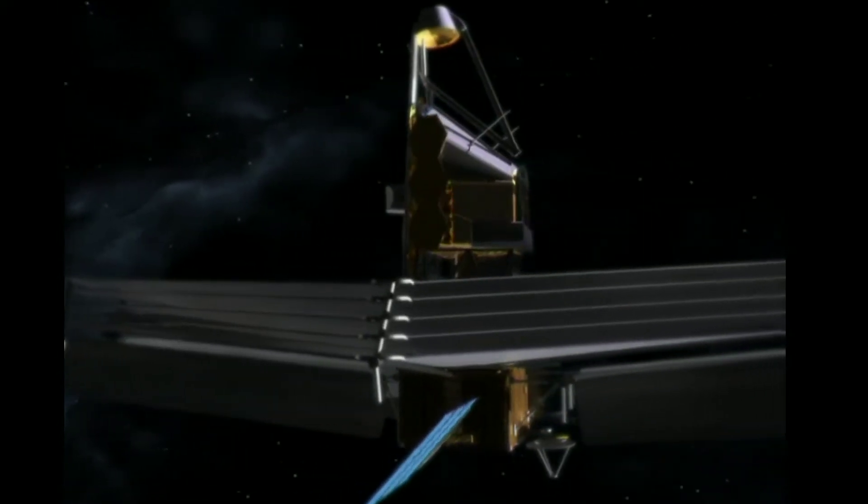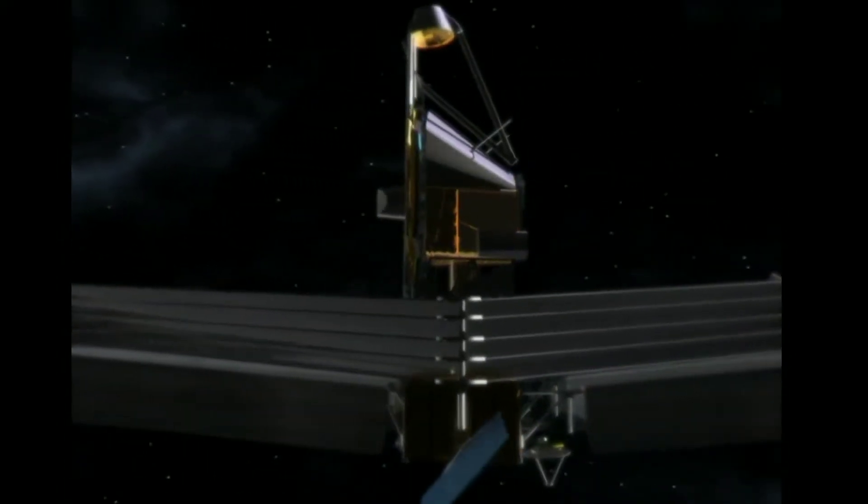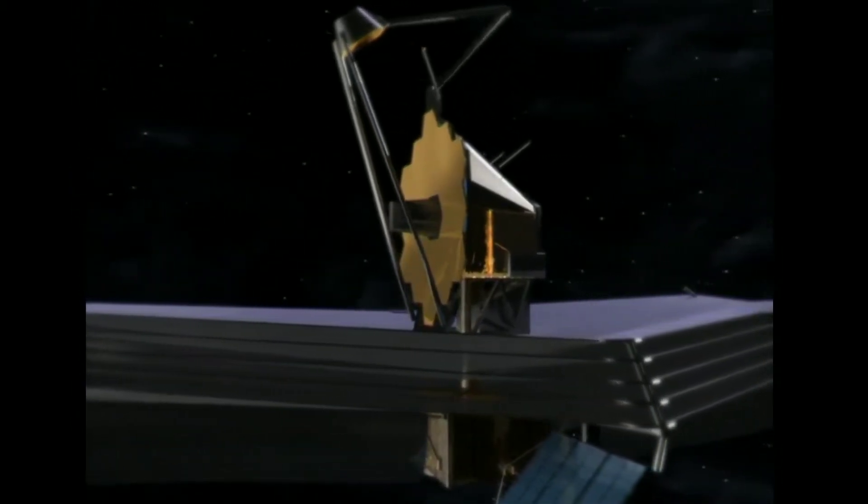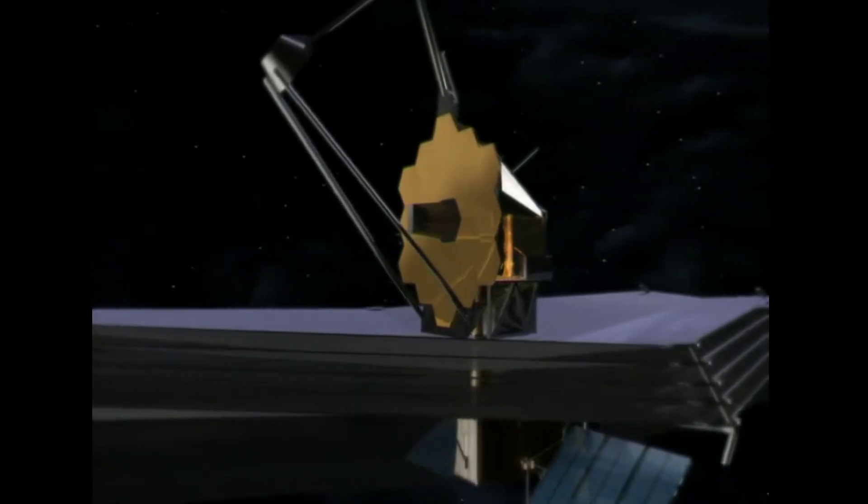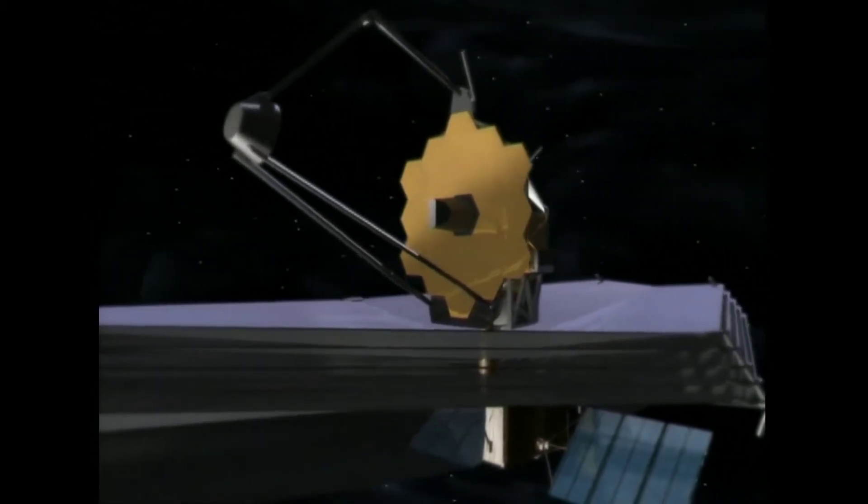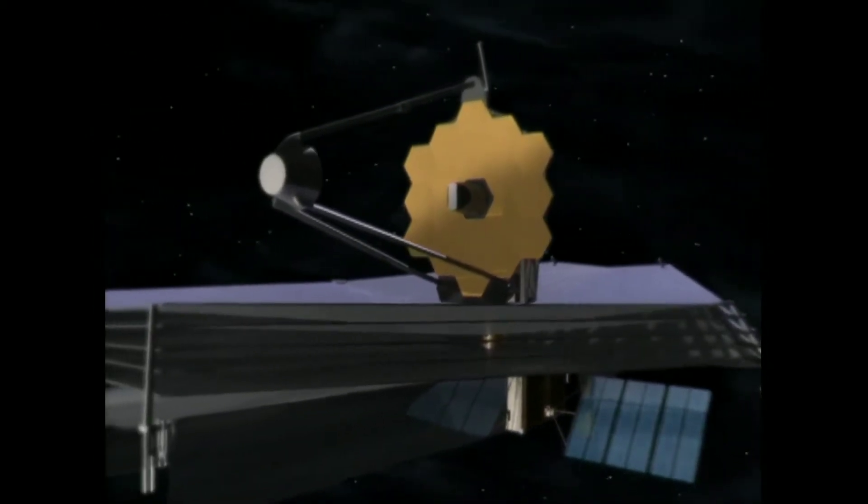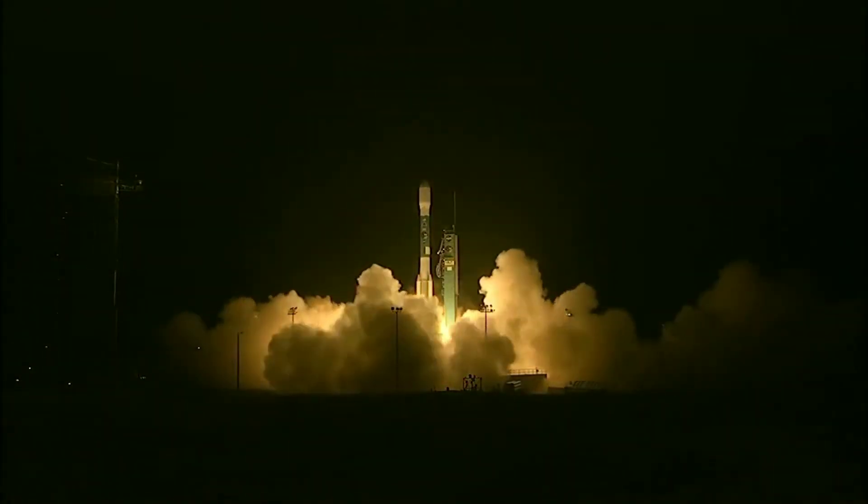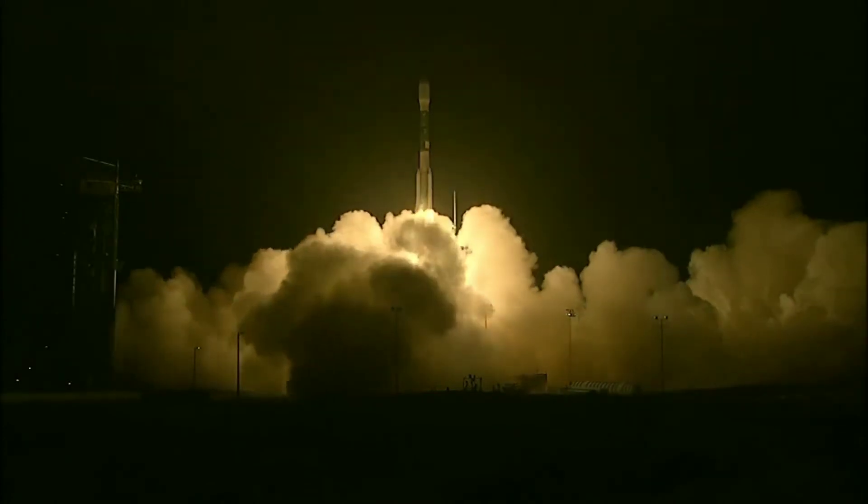The James Webb Space Telescope, you may call it JWST or simply Webb, will be a large infrared telescope with a 6.5 meter primary mirror. The telescope will be launched on an Ariana 5 rocket from French Guiana on 31 October 2021.